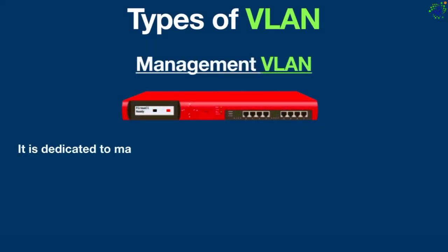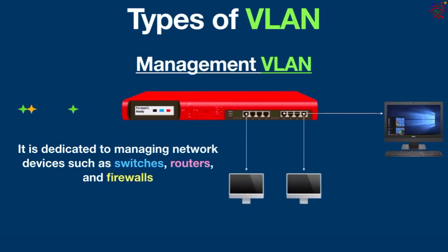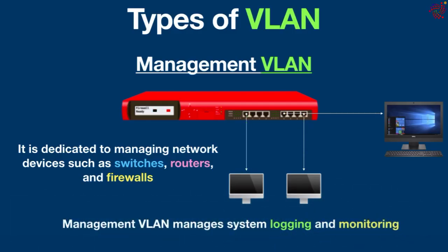Management VLAN is dedicated to managing network devices such as switches, routers, and firewalls. It separates management traffic from regular traffic to enhance security. Management VLAN manages system logging and monitoring. By default, VLAN 1 is the management VLAN. This VLAN ensures that bandwidth for management will be available even if user traffic is high.